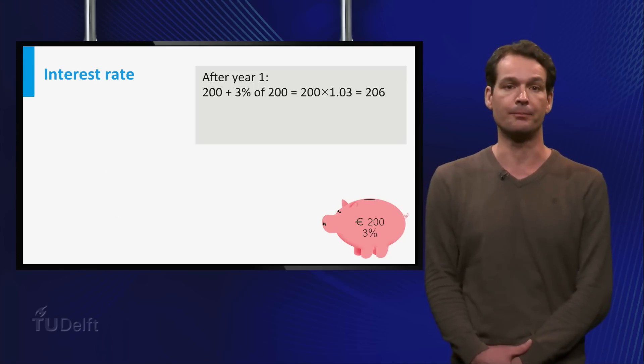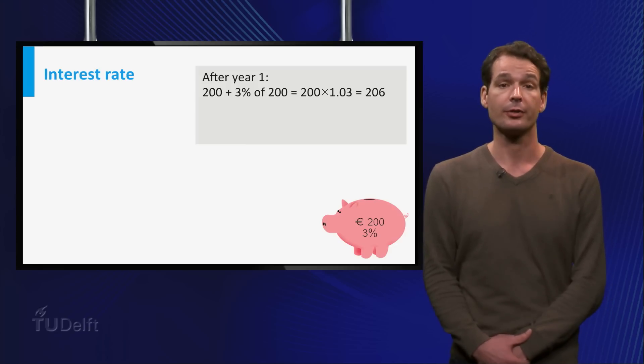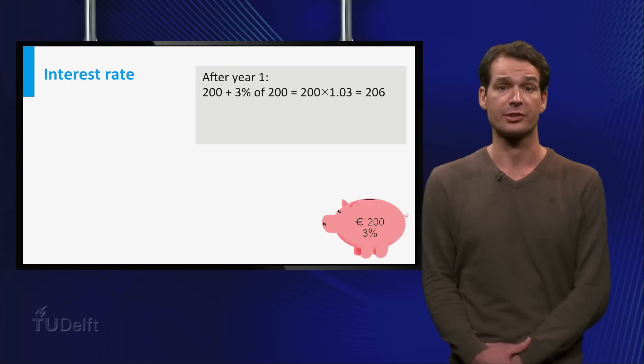Ok, let's see. After year 1 you get 3% of 200 euros interest. So you have 200 times 1.03 equals 206 euros.